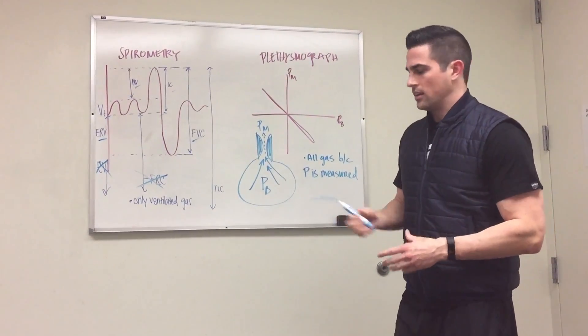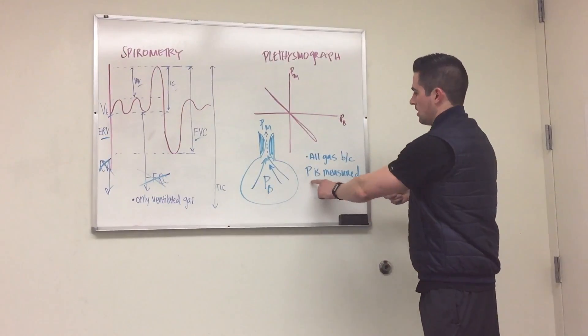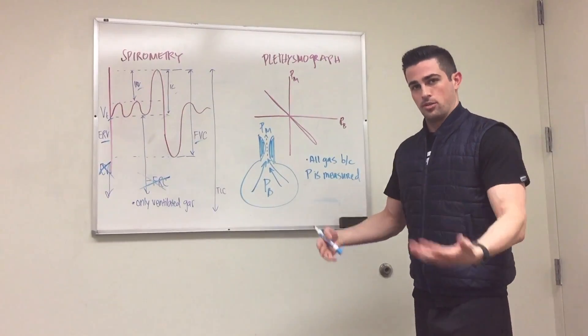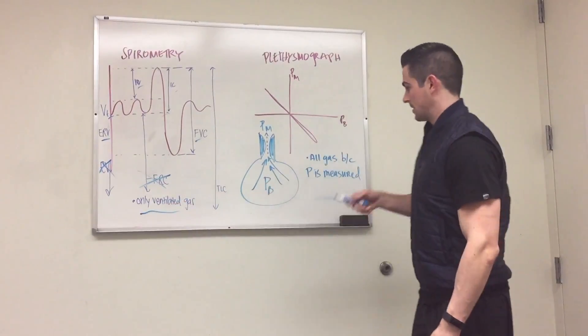When you're measuring pressure, if you have gas trapped in a certain alveolus and you can't get it out, you're still able to measure it because the gas is still there and still expresses a certain pressure. This is why it includes all the gas, whereas spirometry only measured ventilated gas.